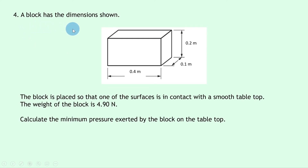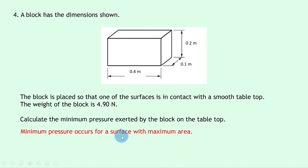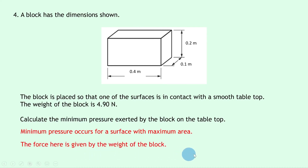Question 4 says that a block has the dimensions shown: a length of 0.4 meters, a width of 0.1 meters and a height of 0.2 meters. The block is placed so that one of the surfaces is in contact with a smooth tabletop. The weight of the block is 4.90 newtons. Calculate the minimum pressure exerted by the block on the tabletop. The key here is that minimum pressure occurs for a surface with maximum area, because the bigger the area the smaller the pressure. So we choose the two largest dimensions to give maximum area and minimum pressure.